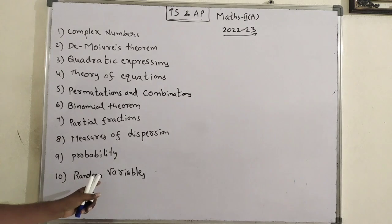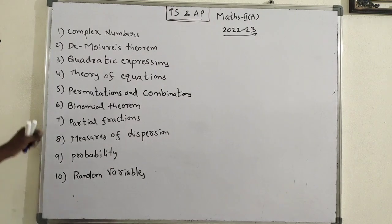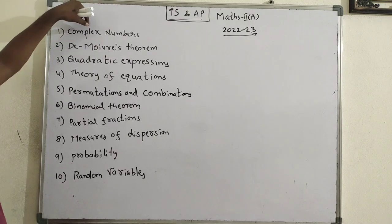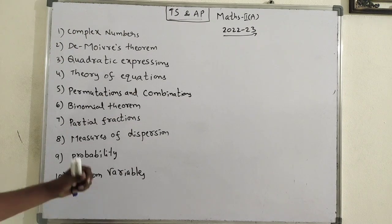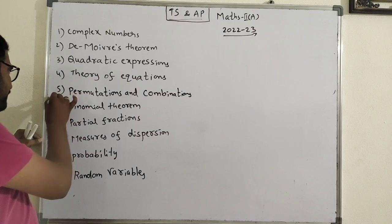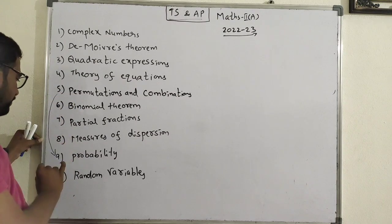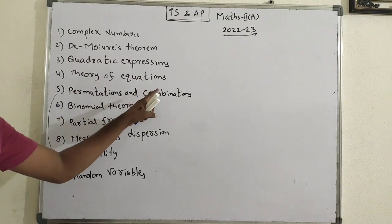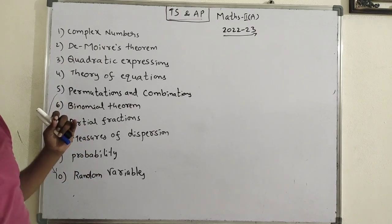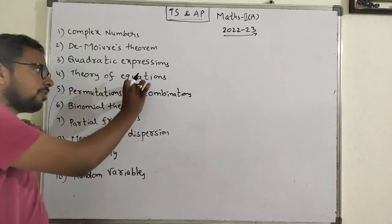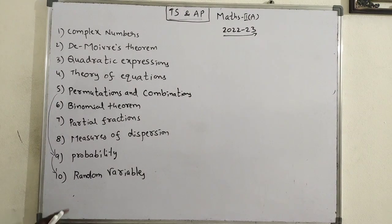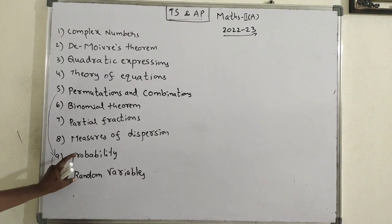The first two chapters — complex numbers and De Moivre's theorem — are similar in pattern. Permutations and combinations and probability are interlinked. If you know the probability formulas and boundaries perfectly, probability becomes easy. Random variables and probability distributions are also interlinked with probability.